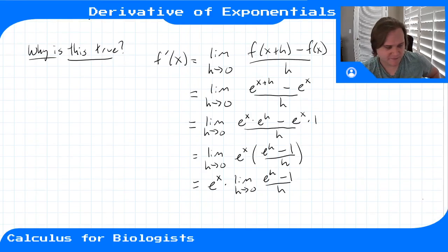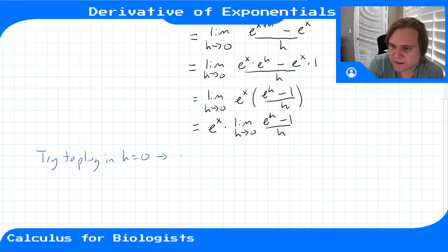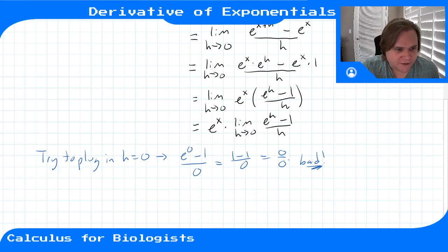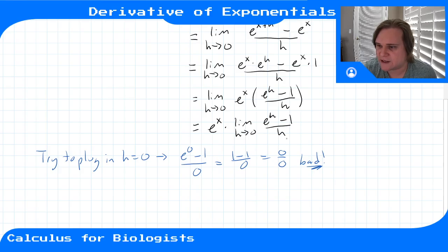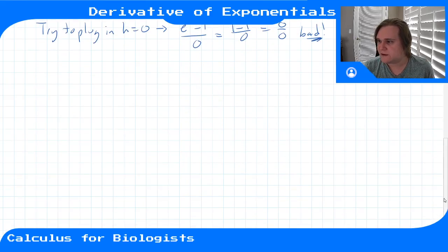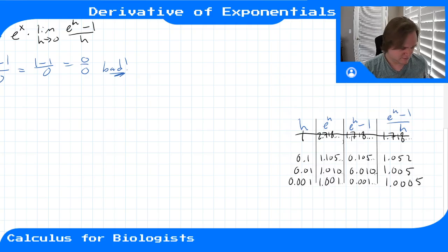Now we're stuck. If we try plugging in h = 0, we get (e^0 minus 1) over 0, which is (1 minus 1) over 0, which is 0/0 — an indeterminate form. We can't say it goes to infinity, negative infinity, or zero. We can't simplify it any further, so we'll look at a table of values to guess what this limit is.